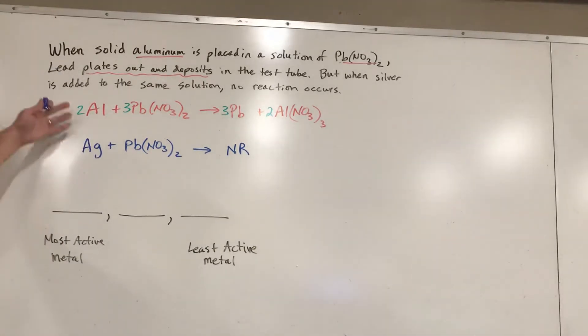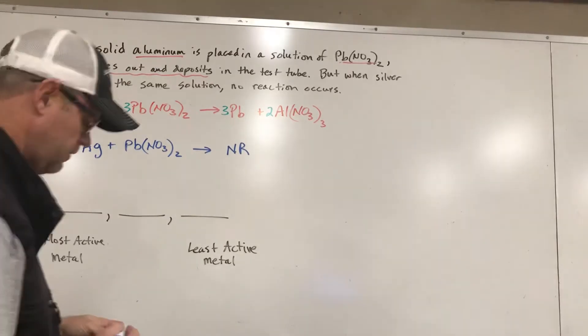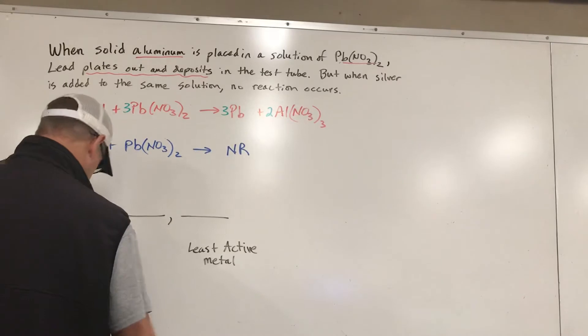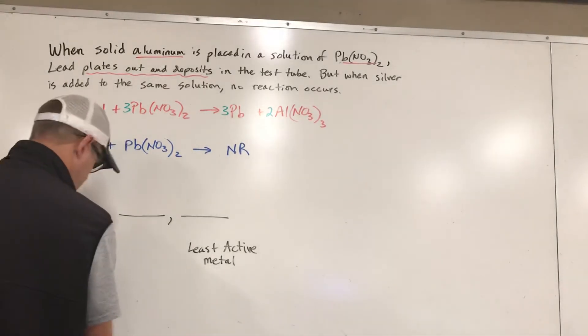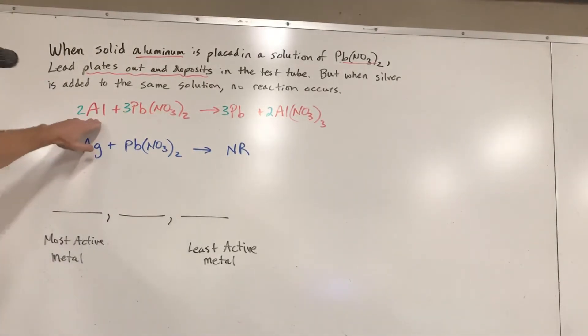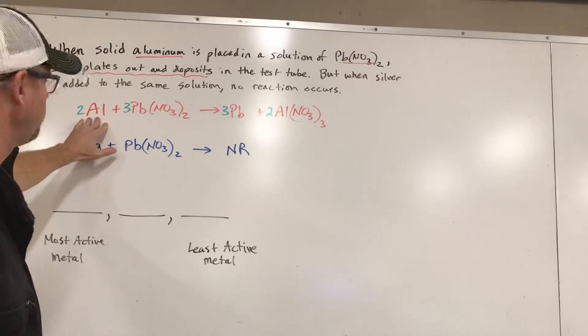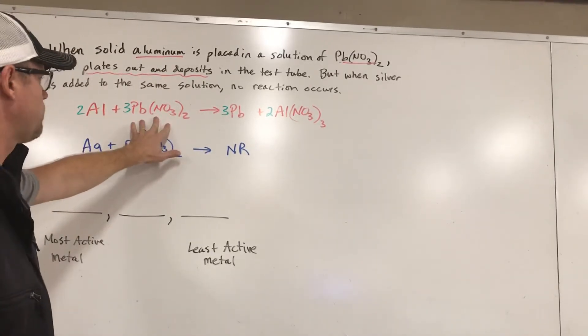Now what we have to do is take this and interpret what's going on in terms of which metal is most reactive and which metal is least reactive. So here's how you would analyze these. If you were to take this first one for example, aluminum, solid, pure, neutral aluminum, like aluminum foil, is placed into this solution and all of a sudden a reaction happens.